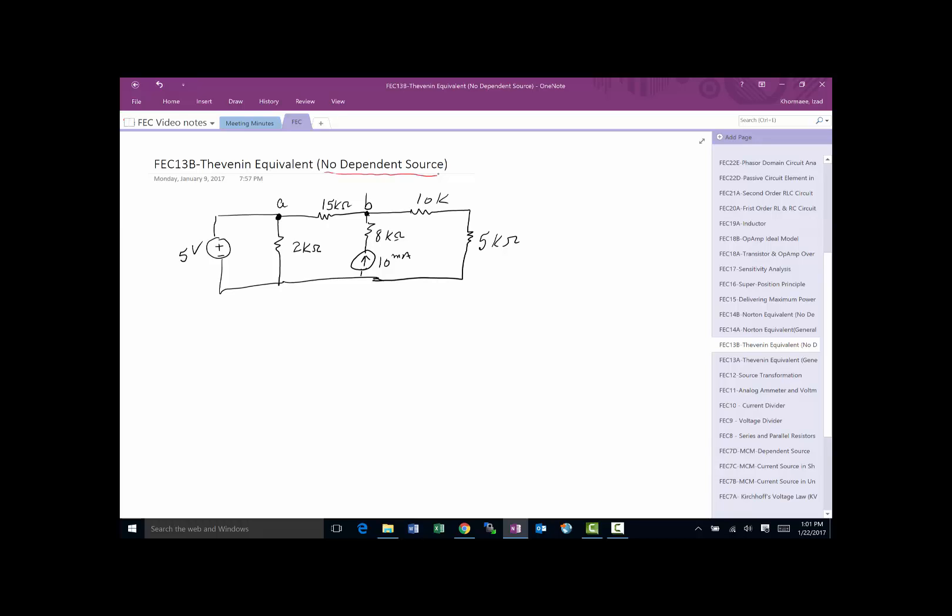So let's say in this case, we are being asked to find a Thevenin equivalent with respect to A and B points. So basically, they want us to replace this circuit with a circuit that is basically a Thevenin equivalent of this.